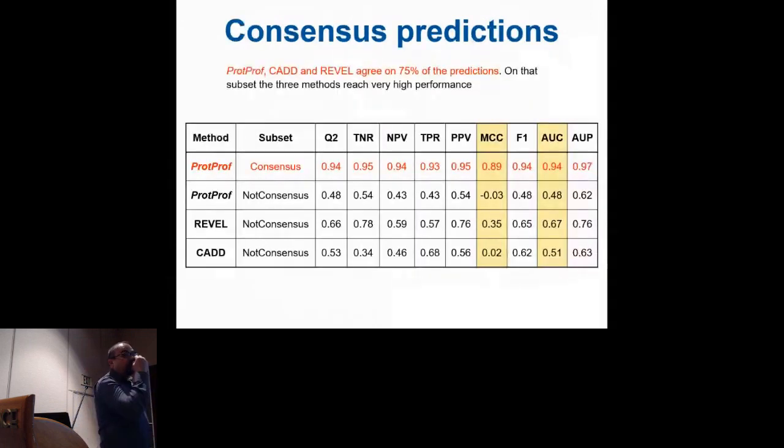We can focus on the subset of consensus and the subset of non-consensus. If you look at the consensus level, the performance is very high, meaning the predictors are almost perfect with 94 percent accuracy and area under the curve about 0.95. But if you focus on the non-consensus, the prediction is almost random. There is some signal in REVEL, but CADD is really having a bad result.